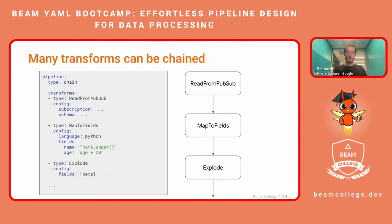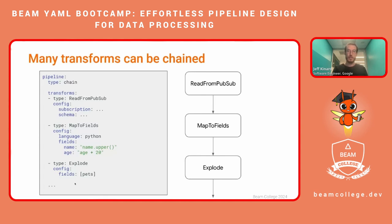Taking this a step further, you can chain multiple transforms. We have our source and our sink, and you're able to put all of your transforms under that transforms tag — the source and sink is merely a syntactic sugar. In this example, we're still using our read from PubSub, chaining it right into map to fields, chaining it right into another turnkey transform called explode, and so on and so forth. You can keep chaining them together until you eventually get to your sink.